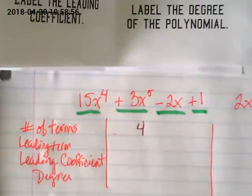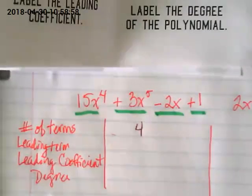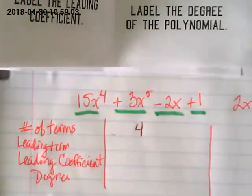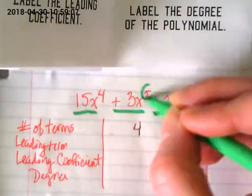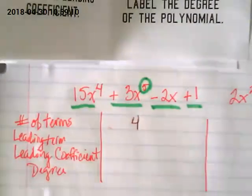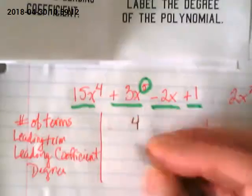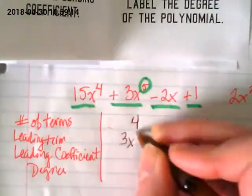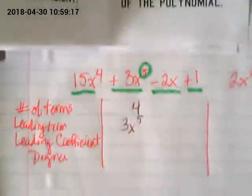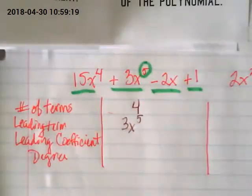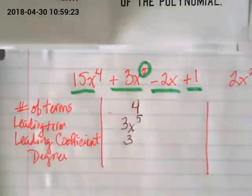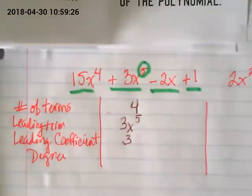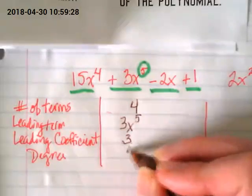The leading term is not necessarily the term that's in the front. It's the term with the highest variable. 3x to the 5th. This exponent of 5 is telling us that that's our leading term. So, our leading term is 3x to the 5th. What's the coefficient in that term? 3. And what's the degree of our highest variable? 5.